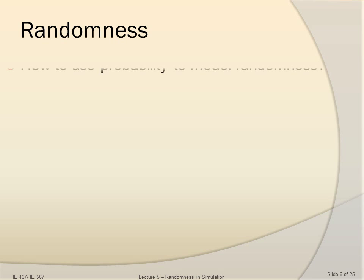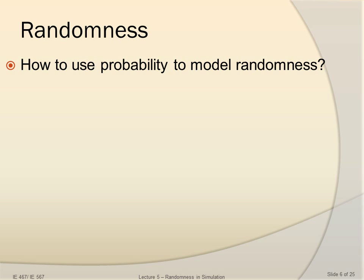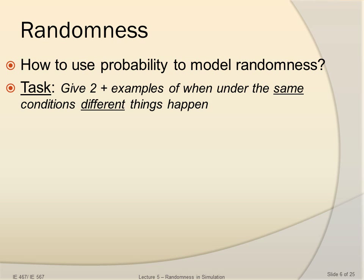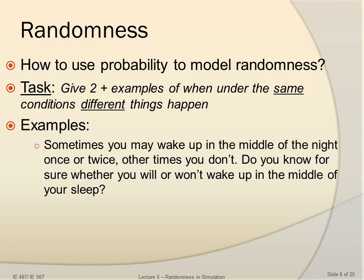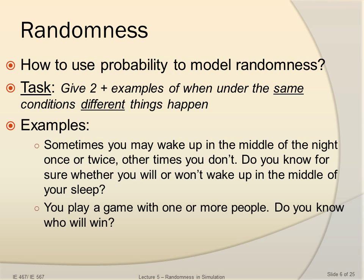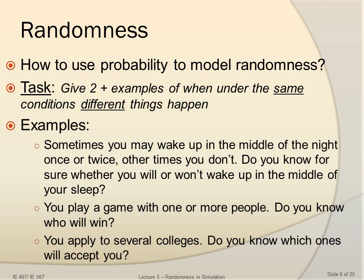Let's discuss randomness — how to use probability to model randomness. Here's a task for you: give at least two examples of when, under the same conditions, different things happen. Examples: sometimes you may wake up in the middle of the night once or twice, other times you don't. Do you know for sure whether you will or won't wake up? Another example: you play a game — do you know who will win? You apply to several colleges — do you know which ones will accept you?